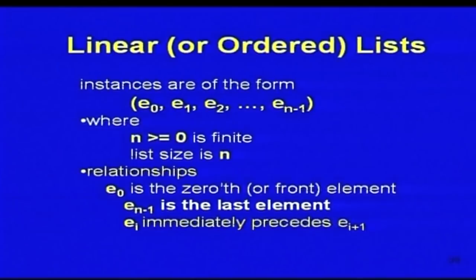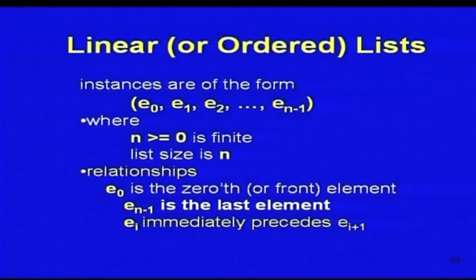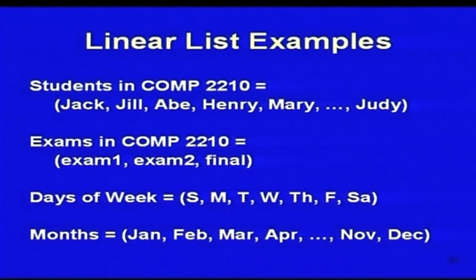You can represent a list as e0, e1, e2, ... e(n-1), assuming n is finite. The size of the list is n. Here e0 is the first element, e(n-1) is the last element, and ei always precedes e(i+1). There is a definite relationship between elements, especially in ordered lists. Examples of linear lists include: students in a course (Jack, Jill, Abby, Henry, Mary, Judy — note this is not an ordered list), exams (exam 1, exam 2, exam final), days of the week, and months.